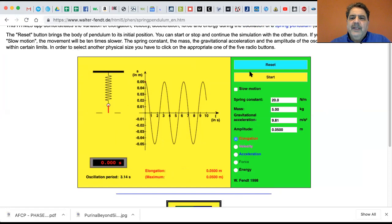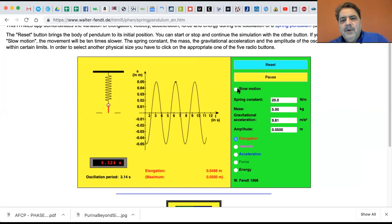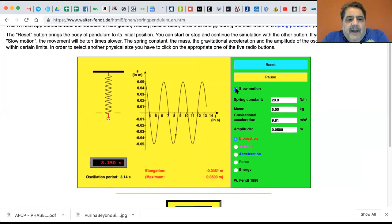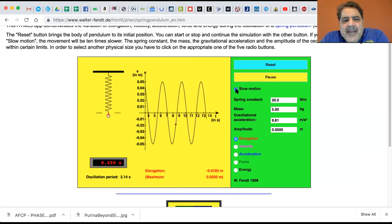And here we've got a spring. Let me go ahead and start it. If I let it play at its normal speed, it's a little choppy. So I'm going to put it in slow motion, and basically what we have here is we have a spring going up and down.